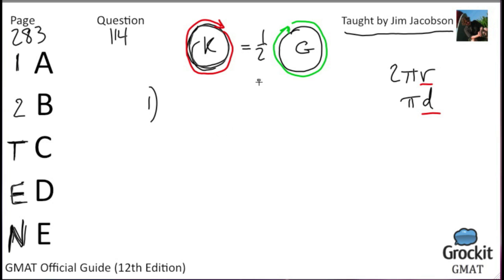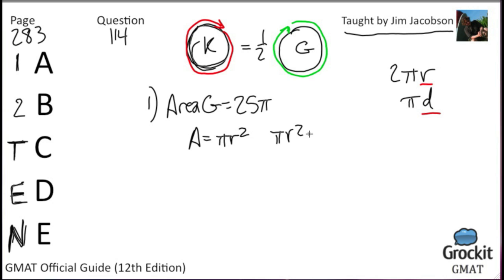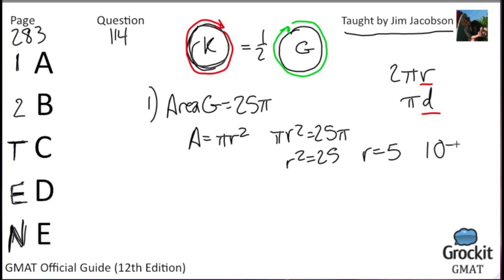Statement 1: the area of G is 25π square meters. The area formula for a circle is πR², so πR² = 25π, therefore R² = 25 and R = 5 for G. Once we have the radius of G, we can figure out its perimeter — that's 10π — and take half of that, giving 5π as the perimeter of K. Statement 1 is sufficient. We can cross off B, C, and E.